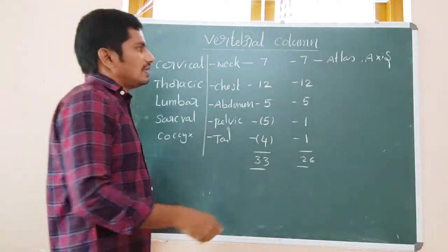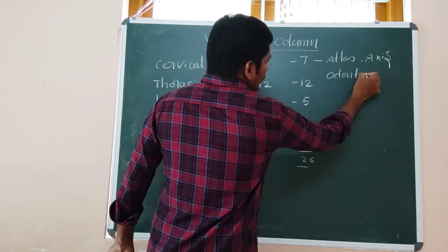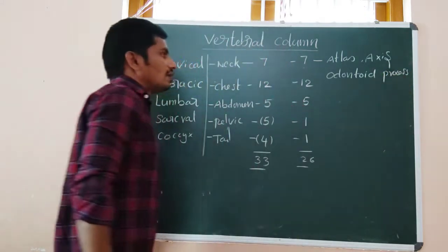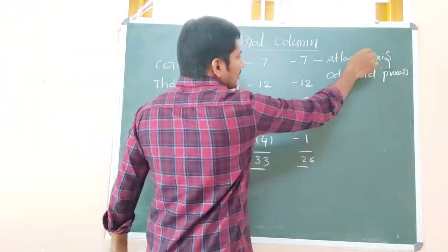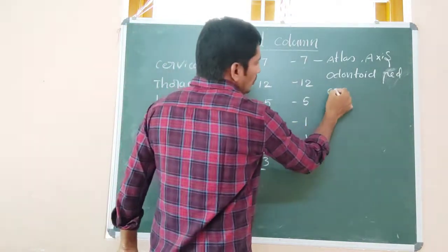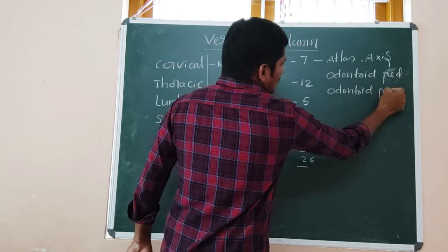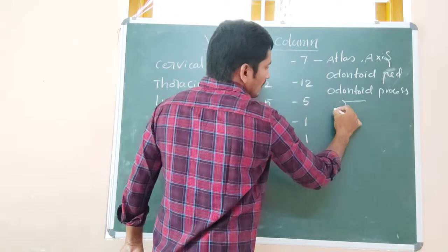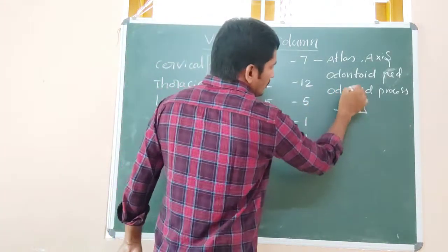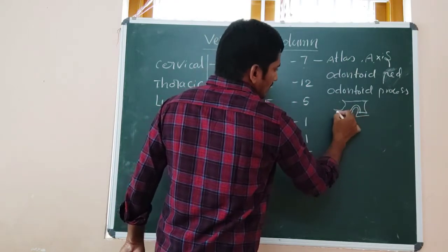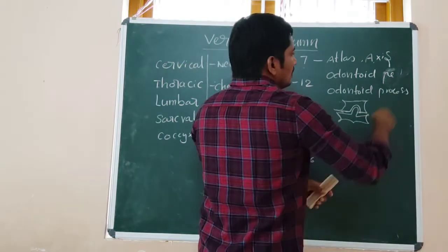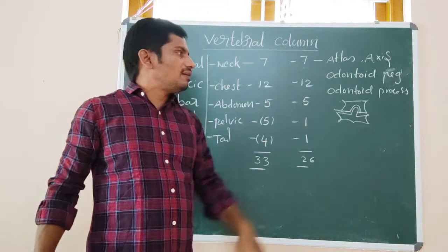The atlas has a depression, and the axis has an odontoid process. The atlas has a depression like a socket, and the axis has the odontoid process which fits into that depression. They articulate together in this way — the odontoid process present in the axis fits into the depression of the atlas, and they are fused together in articulation.